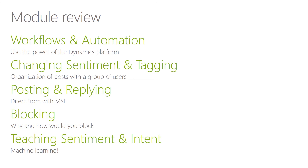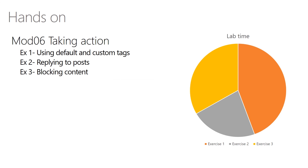So we covered a lot of different options here within this module. We went through workflows and automation choices and how the Dynamics platform can help us be more engaged from a social perspective. We can change sentiment and tagging to help make things more useful for a group and to have more accurate information. We can authenticate certain accounts and do posting and replying directly from within the social application. There's blocking of both words and domains, as well as simply adding exclusions to our searches instead. And we have machine learning where we can teach sentiment and intent for posts specific to our organization or line of business. We do have a hands-on for this module — we'll go through exercises using default and custom tags, replying to posts, and an exercise for blocking of content.